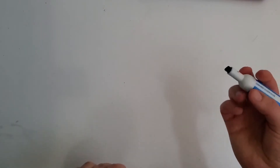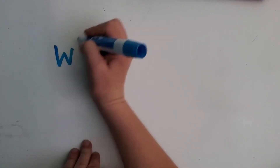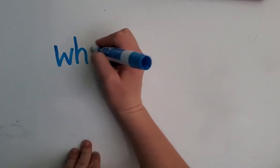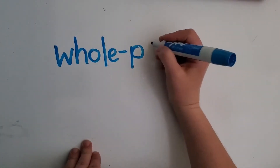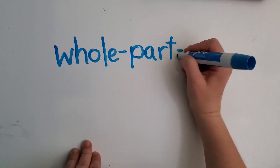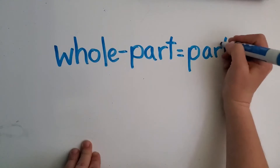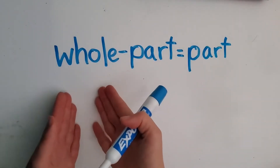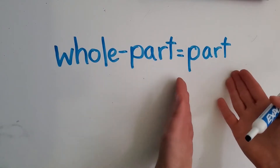I want to give you a few reminders about subtraction. With a subtraction fact, the numbers — we start off with the whole, right? How many there are in all. Then we take away a part of it. And then what we get is the other part. So we start out with the whole, how many there are in all. We take away a part of it. And then what we get is the other part.